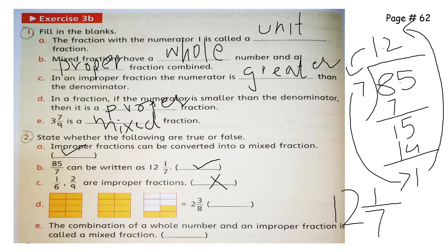Next: 2 whole figures are completely shaded, and the third figure has 8 total parts with 3 shaded. Can we write this as 2 whole 3 by 8? Yes — whole number means a completely full figure, and the fraction represents the divided third figure. So this is true.